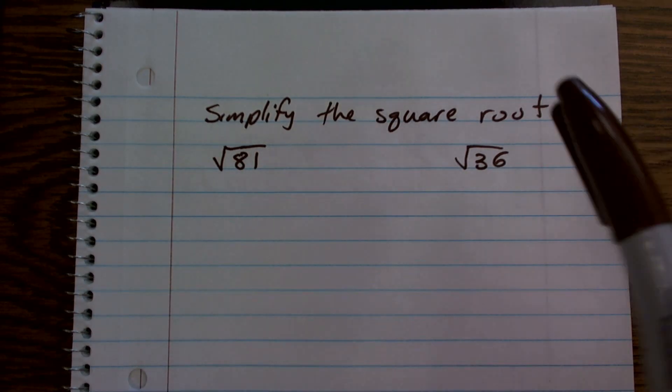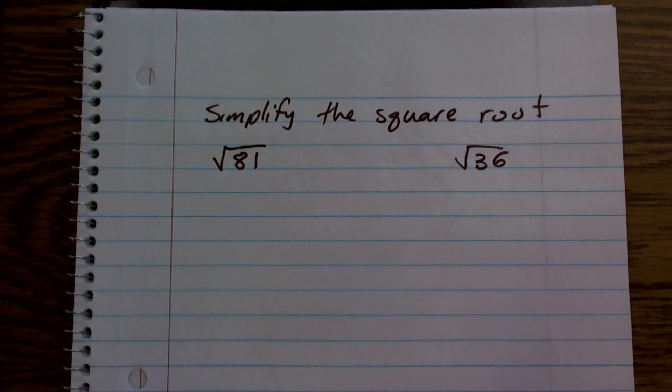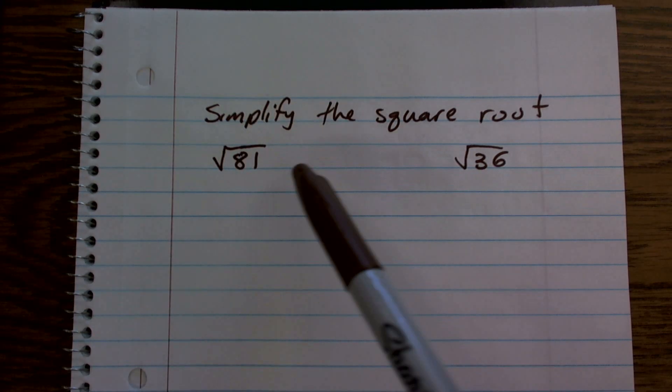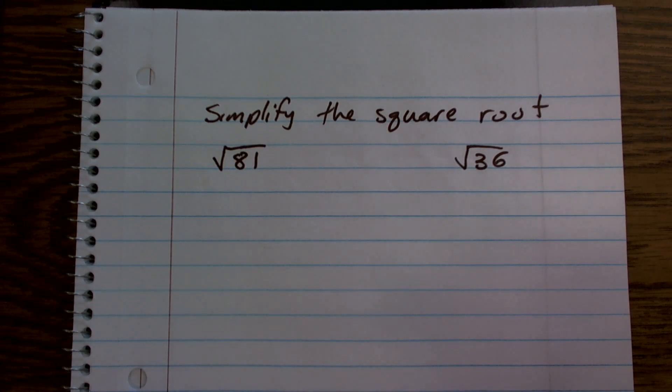But it says simplify the square root, square root of 81, and square root of 36. So we talked about square root. We talked about the radical symbol and the radicand.